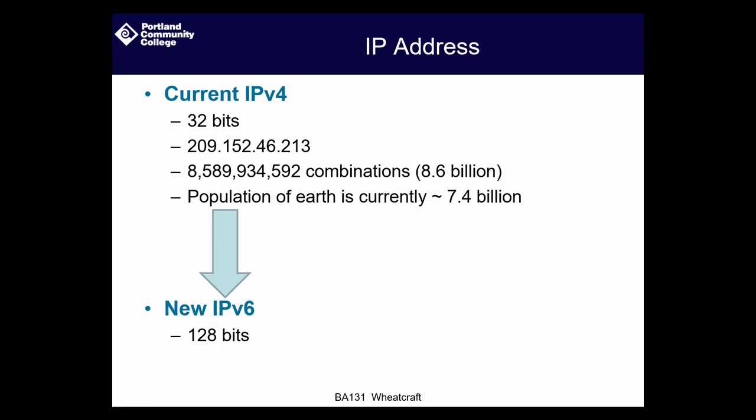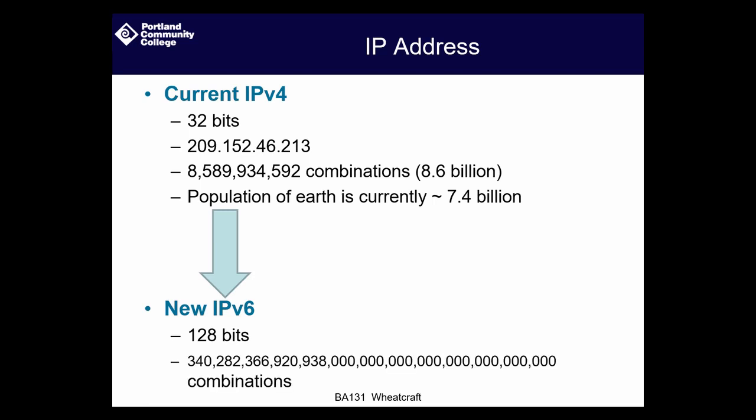Having 128 bits doesn't just mean four times as many combinations — it's exponentially more. The actual number of possible combinations with 128 bits is astronomically large, so that should last us a long time. The challenge is that the numeric address, instead of being 11 numbers like with IPv4, will now be 44 numbers — but it gives us so many more addresses.